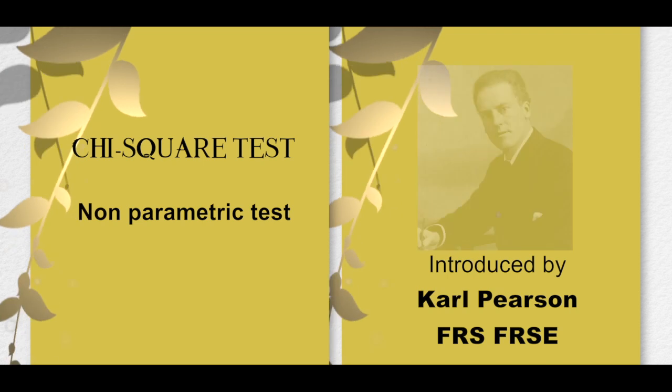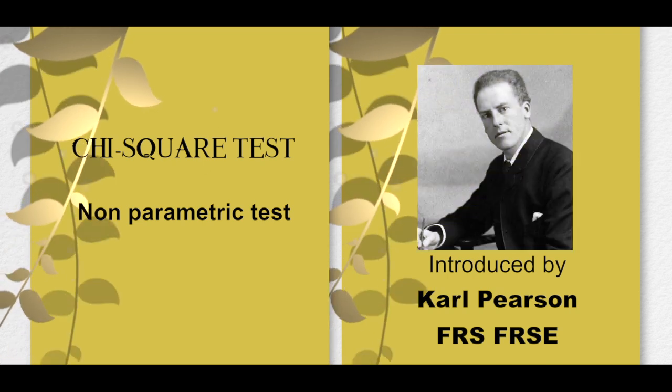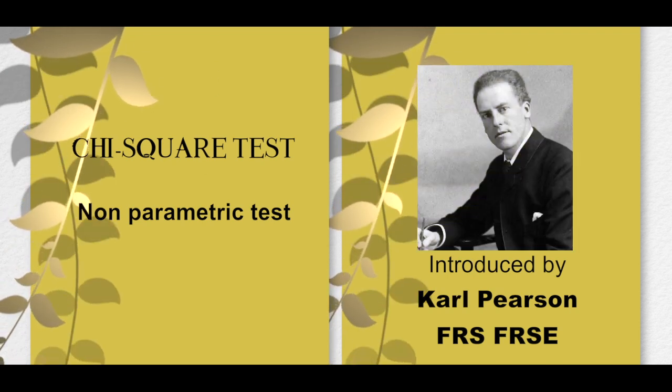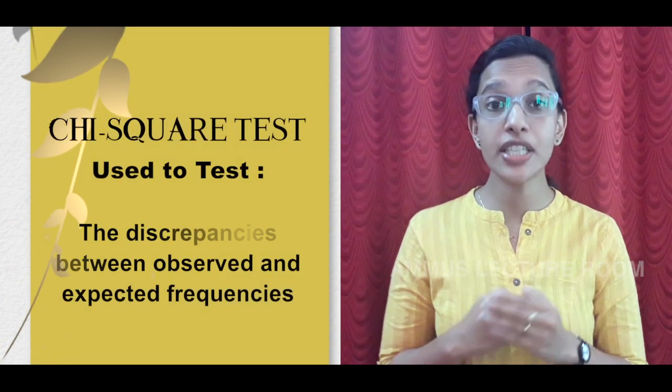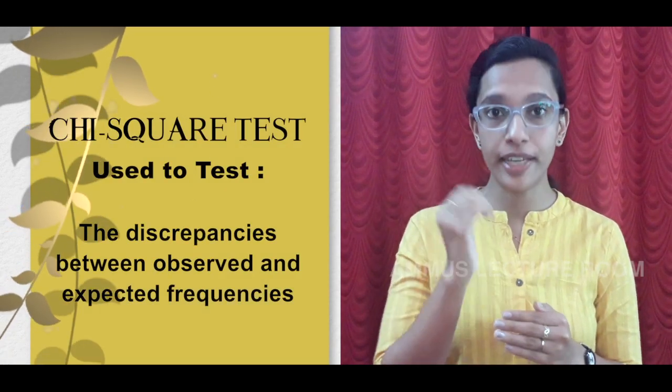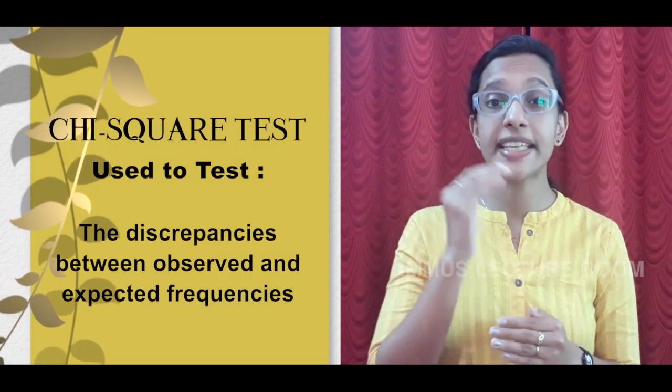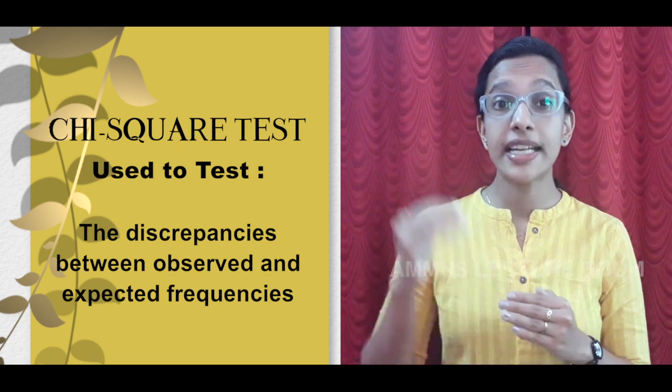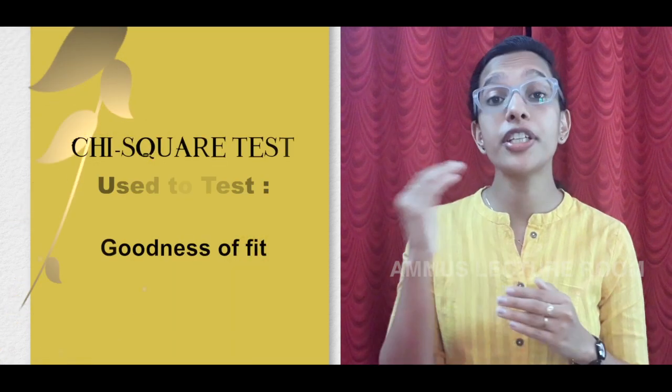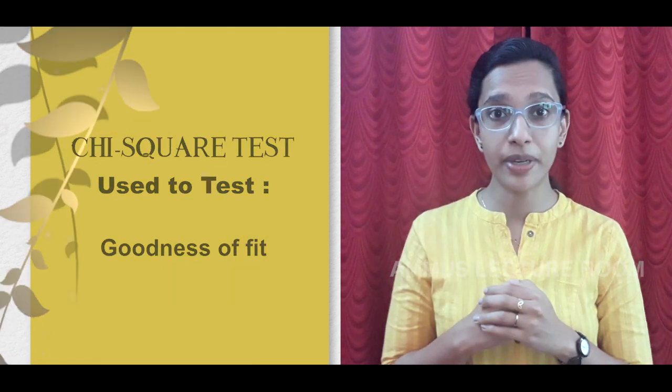Now, we will discuss the three tests: chi-square test, f-test, and t-test. What is chi-square test? Chi-square test is a non-parametric test. It was introduced by Karl Pearson. Chi-square test is used with observed frequency, expected frequency, discrepancy, and goodness-of-fit.